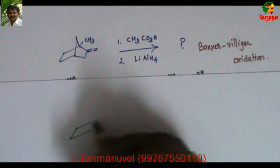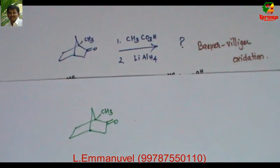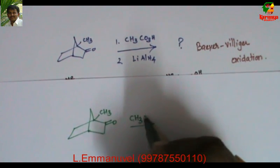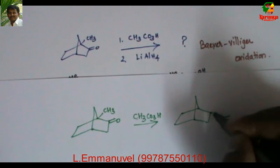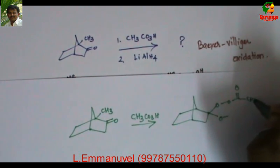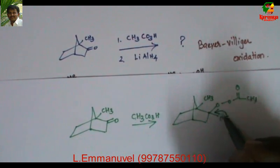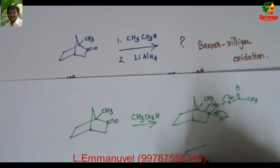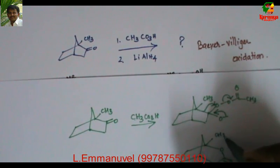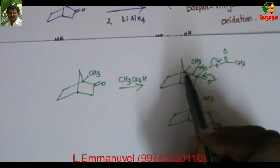Now let us apply this to the given problem. This is the bicyclic ketone. When treated with peracetic acid, the peracetic acid attacks the carbonyl carbon to give the tetrahedral intermediate. When it collapses, the highly substituted carbon migrates. So the oxygen is inserted between the carbonyl carbon and the most substituted carbon, giving us a lactone product.